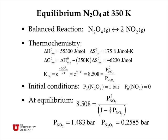This is a quadratic equation, and so we can solve for the partial pressure of NO2, and that turns out to be 1.483 bars. We can get the partial pressure of N2O4 by knowing that the initial pressure was one bar, and subtract half of the partial pressure of NO2, and that turns out to be 0.2585 bars. And if we take, as a check, the square of the equilibrium pressure of NO2 and divide by 0.2585, we get the value 8.508. So we know that this calculation was successful.